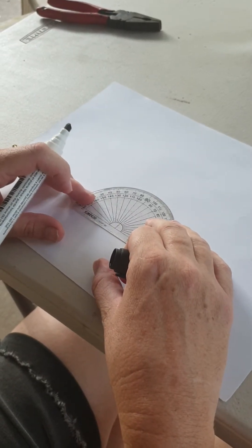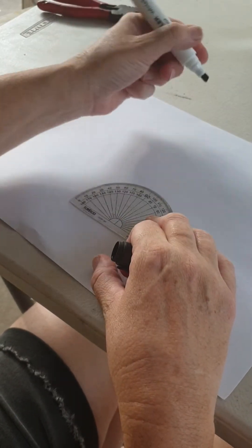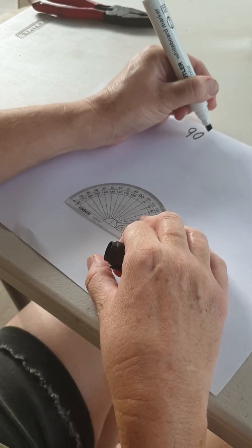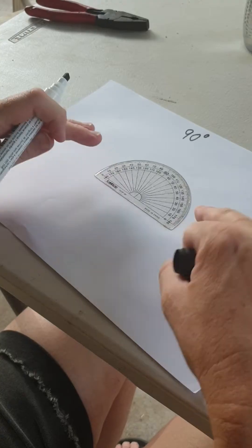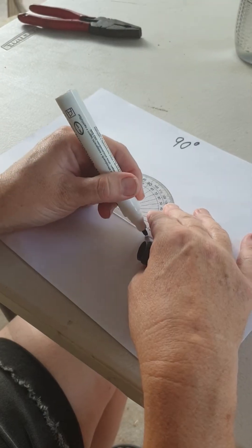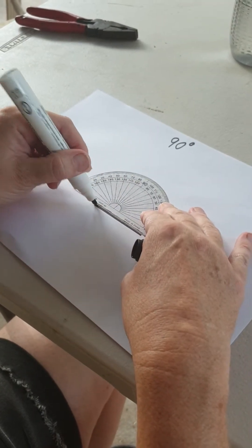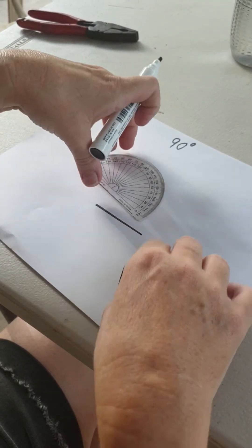Imagine that you need to draw an angle of about 90 degrees. This is how you use your protractor. The first thing you do is you draw a line with your protractor like that.